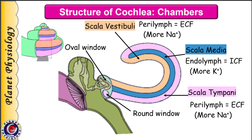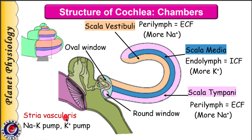Composition of perilymph is the same as that of extracellular fluid — it contains more sodium and chloride and less potassium ions. Scala media is a blind tube, hence it is also called cochlear duct. It is filled with fluid called endolymph. Its composition is similar to intracellular fluid — it contains more potassium ions and less sodium and chloride ions. Endolymph is continuously secreted by stria vascularis, which is the network of capillaries at the outer surface of scala media. Stria vascularis possesses many sodium-potassium pumps as well as electrogenic potassium pumps, which actively pump potassium into scala media. Due to this, the potential in scala media is 85 mV higher with respect to perilymph.